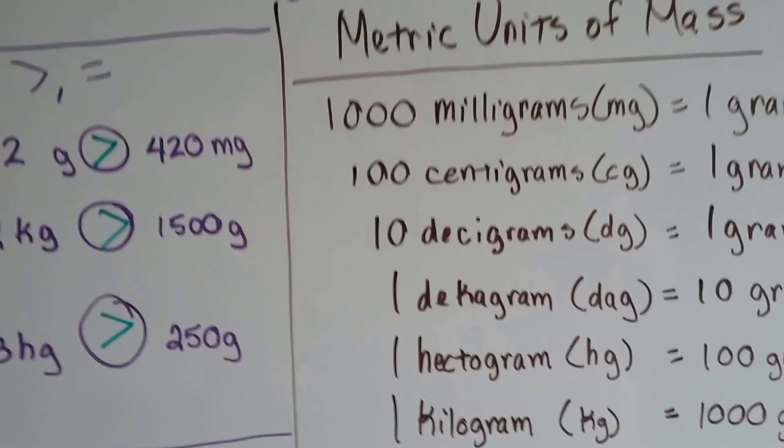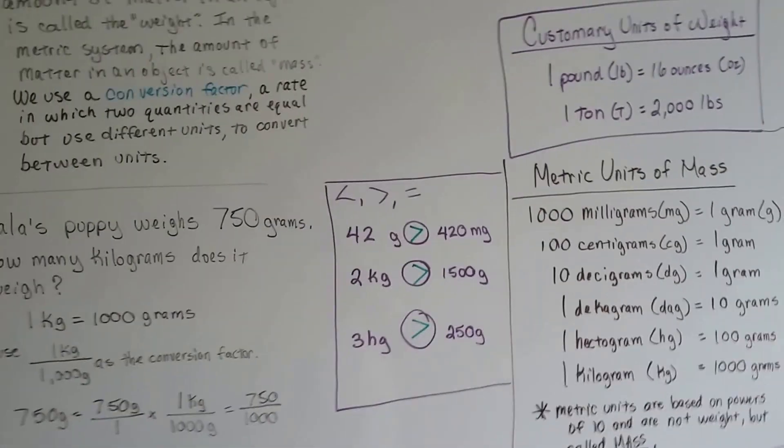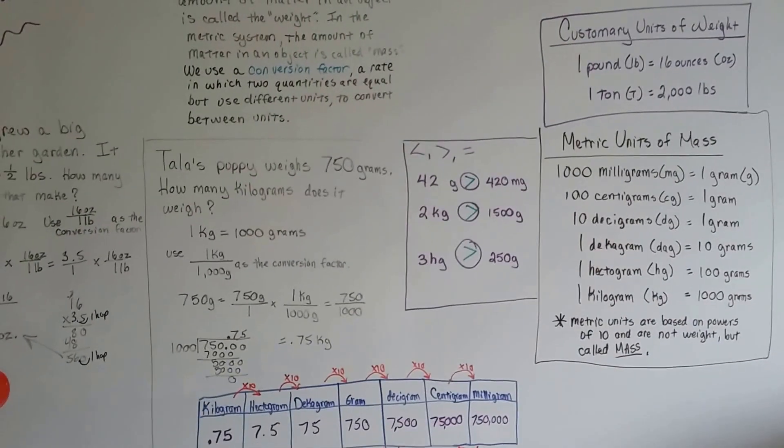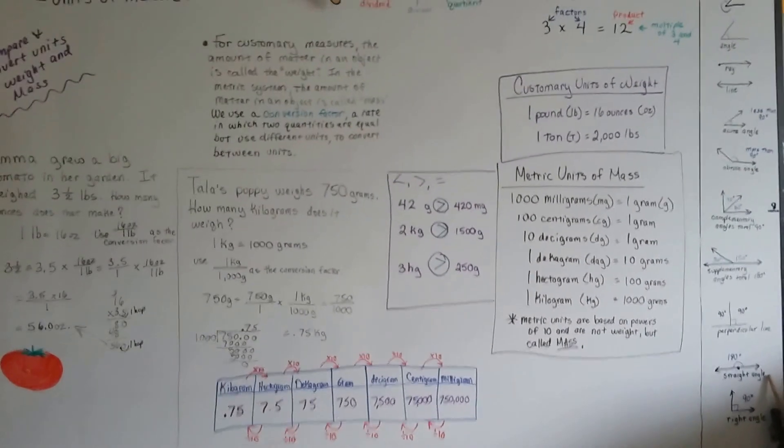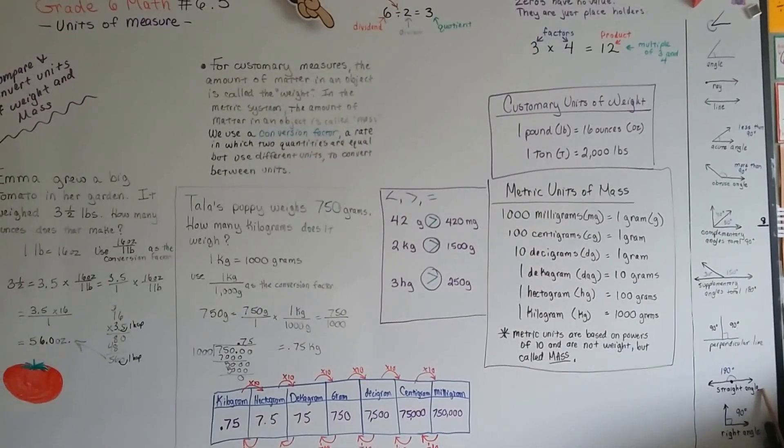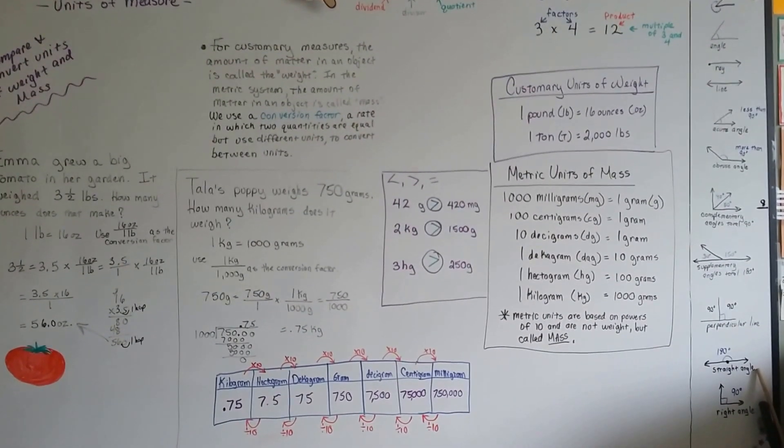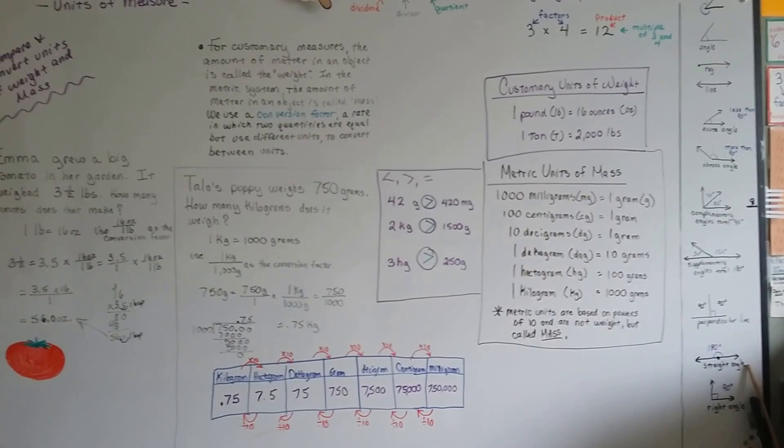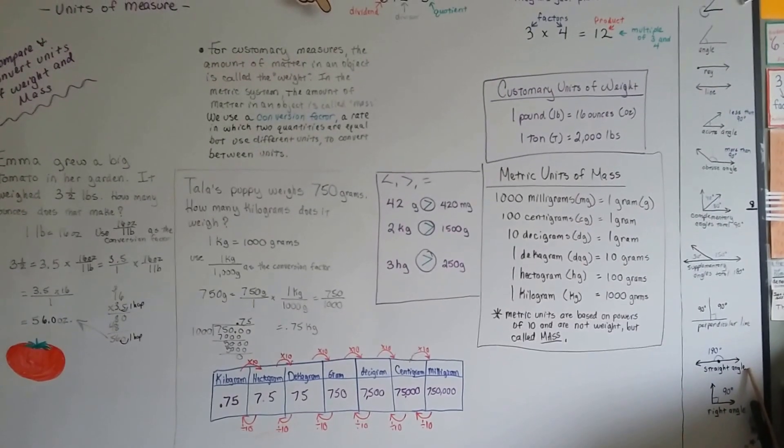So you can find these conversion charts in the back of your textbook, just like we did for the length and for the fluid ounces. You can find them for weights and mass, too. And you can find them online. And they'll help you to convert back and forth between the units. And now you know how, between length and the fluid ounces, and now this weight and mass, how to use a conversion factor. We've done it three different ways with three different types of measure, haven't we?